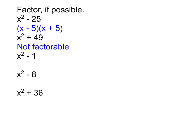Next up, x squared minus 1. This one can be a little tricky. Is it factorable? Yes — notice it's subtraction, and when we don't have an x term we need to be subtracting, so that looks good. We're looking for two numbers that add to zero but multiply to negative 1. Yes: 1 times 1 is 1, so we can use negative 1 and positive 1, and that works.